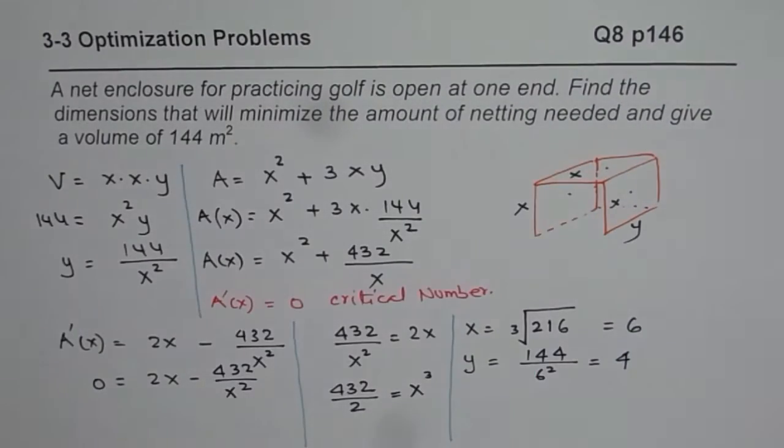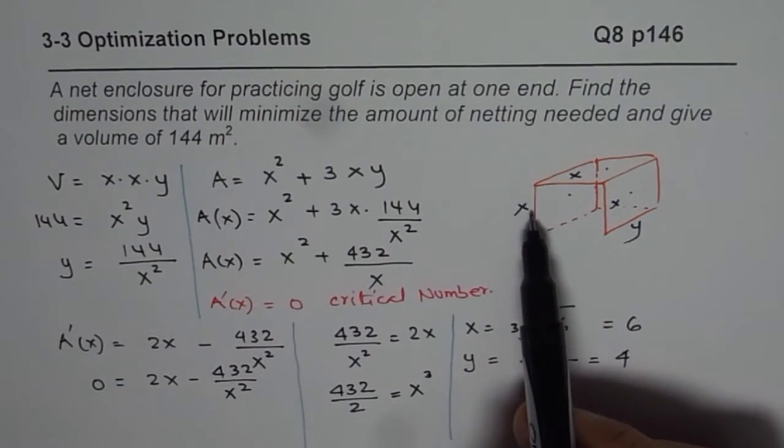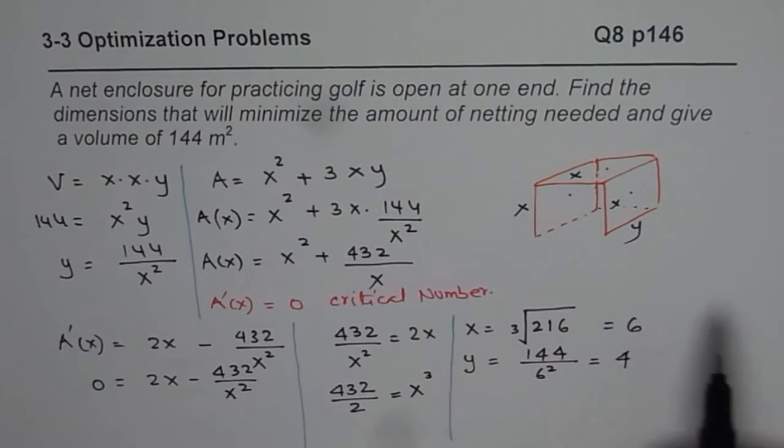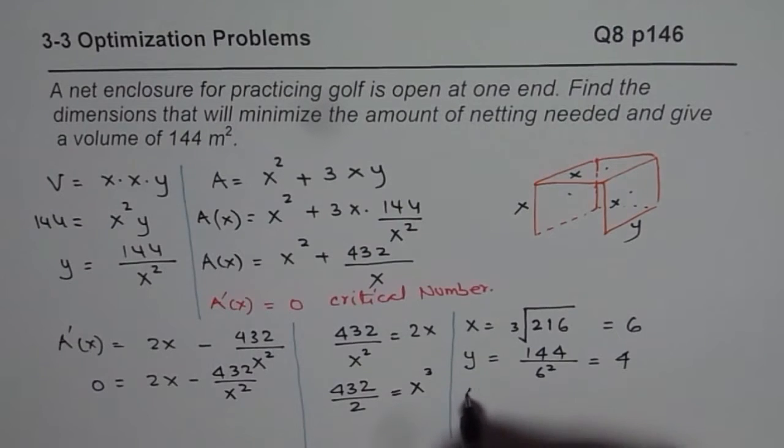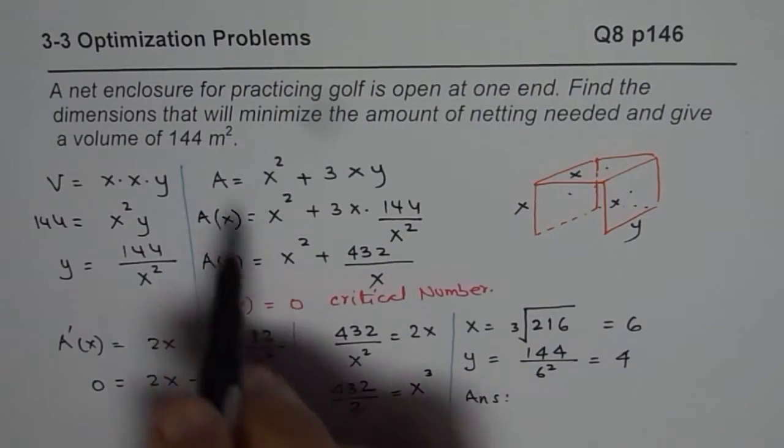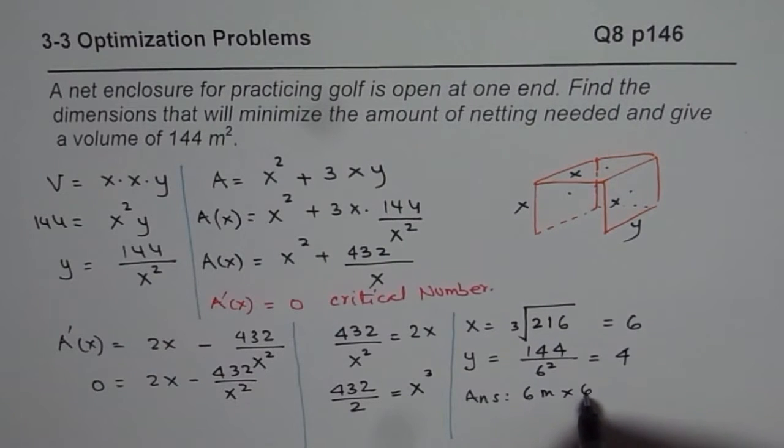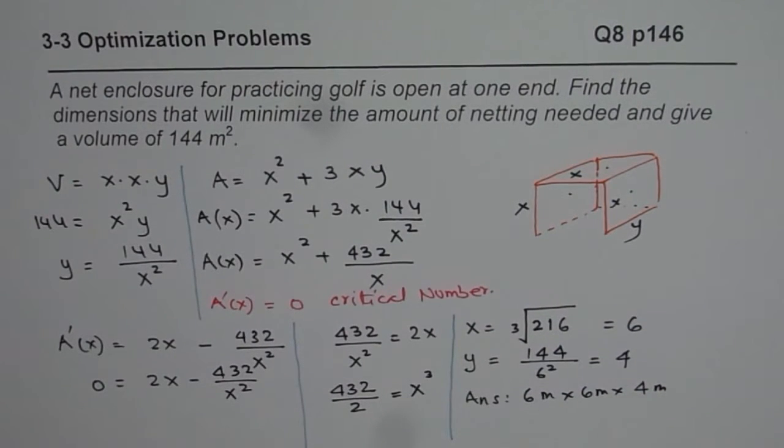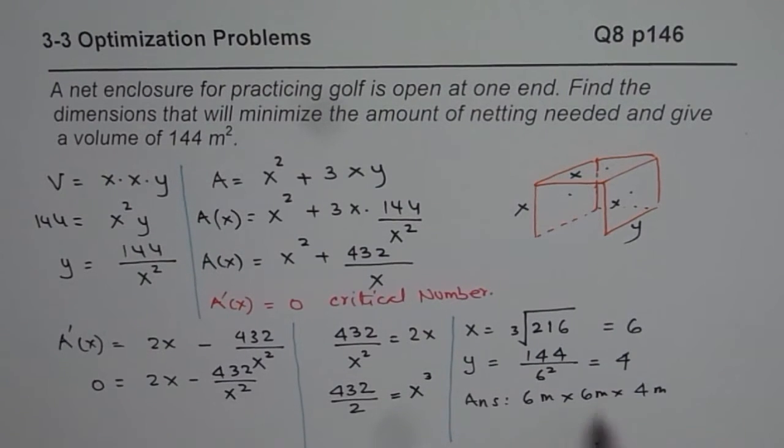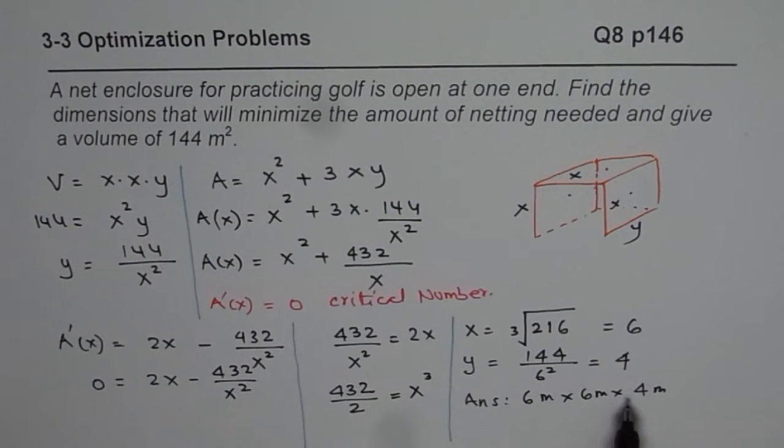Therefore, the dimensions will be - this side will be - the net square is 6 by 6. So our answer will be, it is all in meters, 6 meters by 6 meters by 4 meters. So that is the netting which is going to minimize the cost.